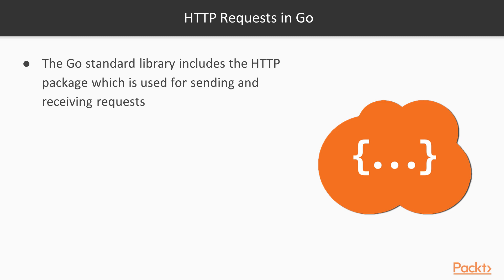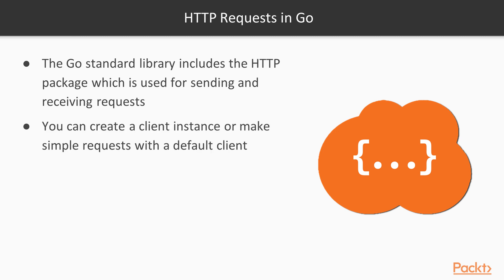Requests in Go. The Go Standard Library includes the HTTP package, which is used for sending and receiving requests. You can create a client instance or make simple requests with a default client. Go comes packaged with an HTTP library — it has an HTTP client, which is primarily what we're going to be using in this course, and it also includes a server component. For client transactions, you can either use the default client for simple requests, or create your own client for more complex requests.